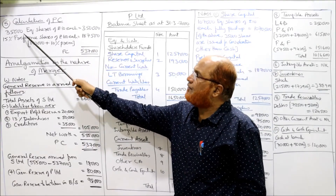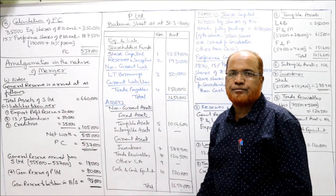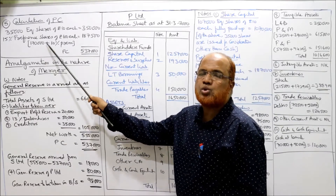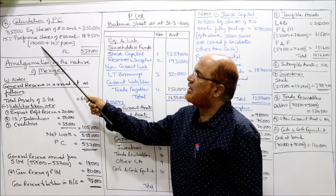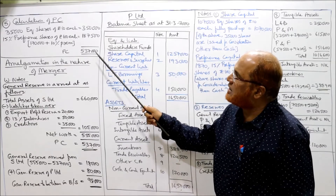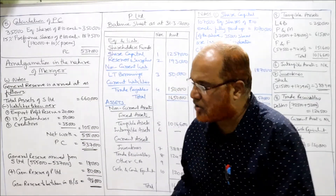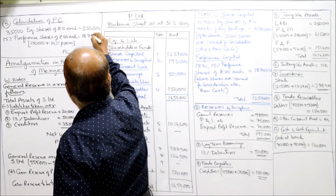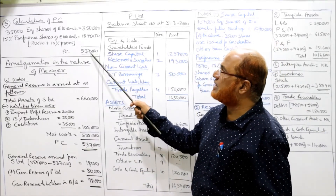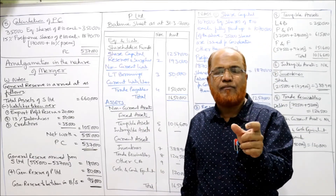Calculation of purchase consideration: 35,000 equity shares of ₹10 each = ₹3,50,000. 15% preference shares of ₹100 each to discharge S Limited's preference share capital of ₹1,70,000 plus 10% premium of ₹17,000 = ₹1,87,000. Therefore, total purchase consideration = ₹3,50,000 + ₹1,87,000 = ₹5,37,000. This PC will remain the same whether the amalgamation is in the nature of merger or purchase.